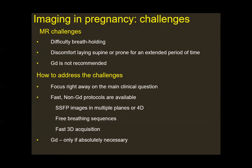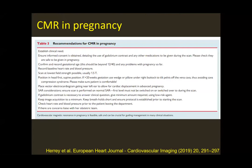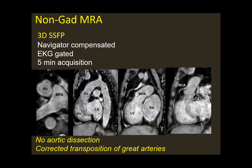It cannot be overemphasized: gadolinium should be given only if absolutely necessary. A European Heart Association paper on recommendations for cardiac MRI in pregnancy provides a very nice summary of the adjustments needed — I encourage everyone involved in imaging pregnant patients to read it. As an example, a patient imaged with 3D SSFP — with an acquisition time of five minutes — demonstrated corrected transposition of the great arteries very clearly, without gadolinium administration and with a short overall imaging duration.